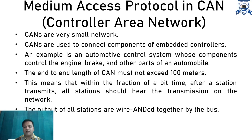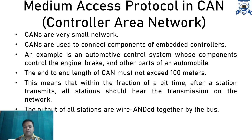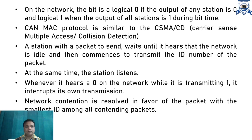Within a fraction of a bit time after a station transmits a signal, all stations should hear that transmission. The outputs of all stations are wire-ANDed together by the bus. On the network, a bit is logical 0 if the output of any station is 0, meaning that station is not transmitting. Logical 1 occurs when the output of all stations is 1 during that bit time.